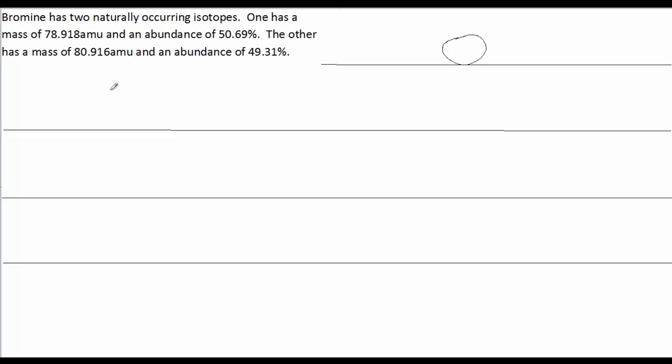This question really is to determine the atomic mass of bromine. The way to handle this kind of problem is to simply take the numbers, multiply them, and add them.